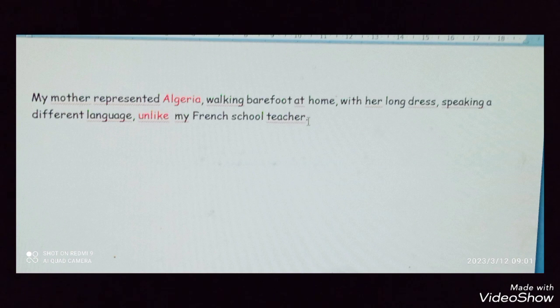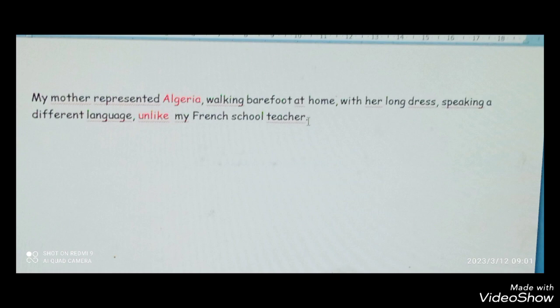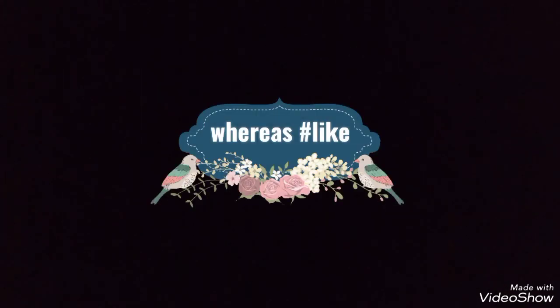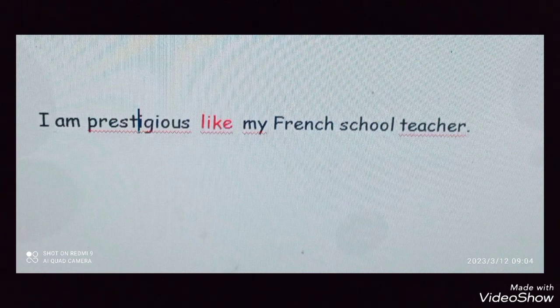What is the difference between them? After 'whereas,' in the first sentence, we write a full clause. I also use the opposite of 'whereas' and 'unlike,' which is 'like.' For example: I am dominating and prestigious like my French school teacher. You notice that 'like' is used as a word, but the first sentence equals the second sentence.